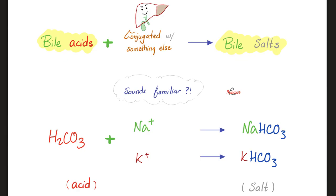The good stuff is bile acids. Conjugate the acid with something else and you have bile salts. Here is an acid, here is something else, and here is a salt.